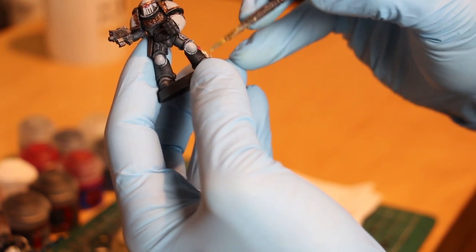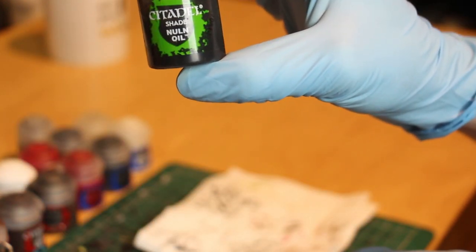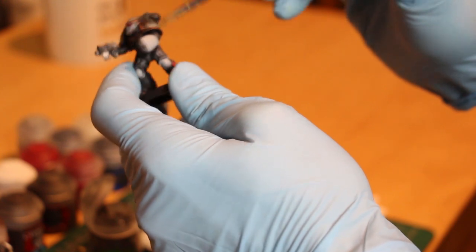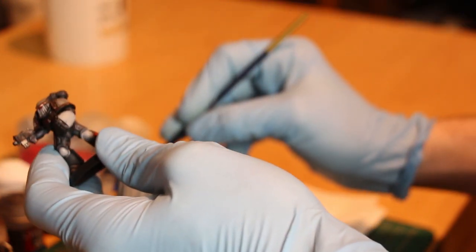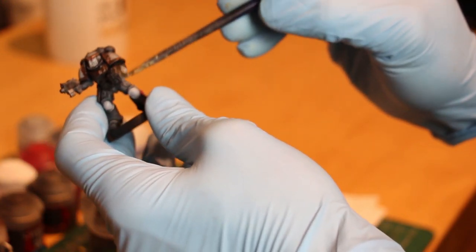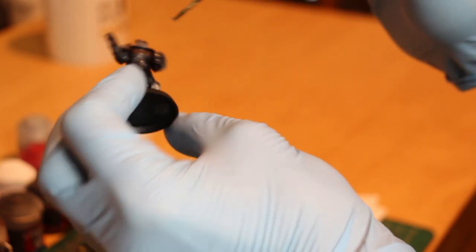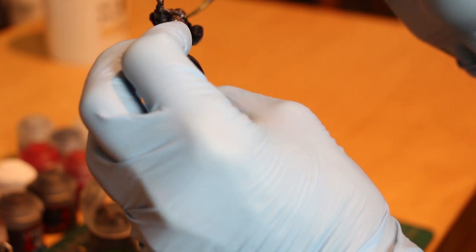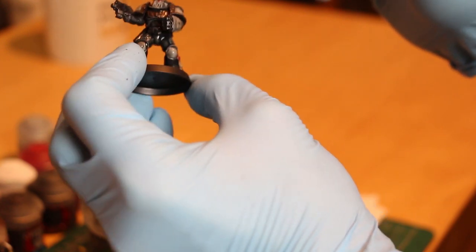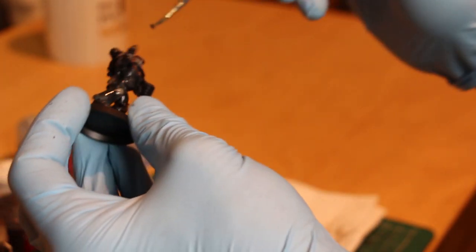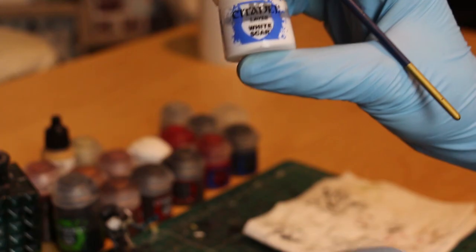Okay so now it's time to shade. We're going to use Nuln Oil all over the model with the exception of the more gold plated areas to really darken everything down. And I mean everything. Even the areas that we're going to make white, even the glowing red eyes, the metals, everything. We're going to really get it in those crevices and then give our model around half an hour to dry.